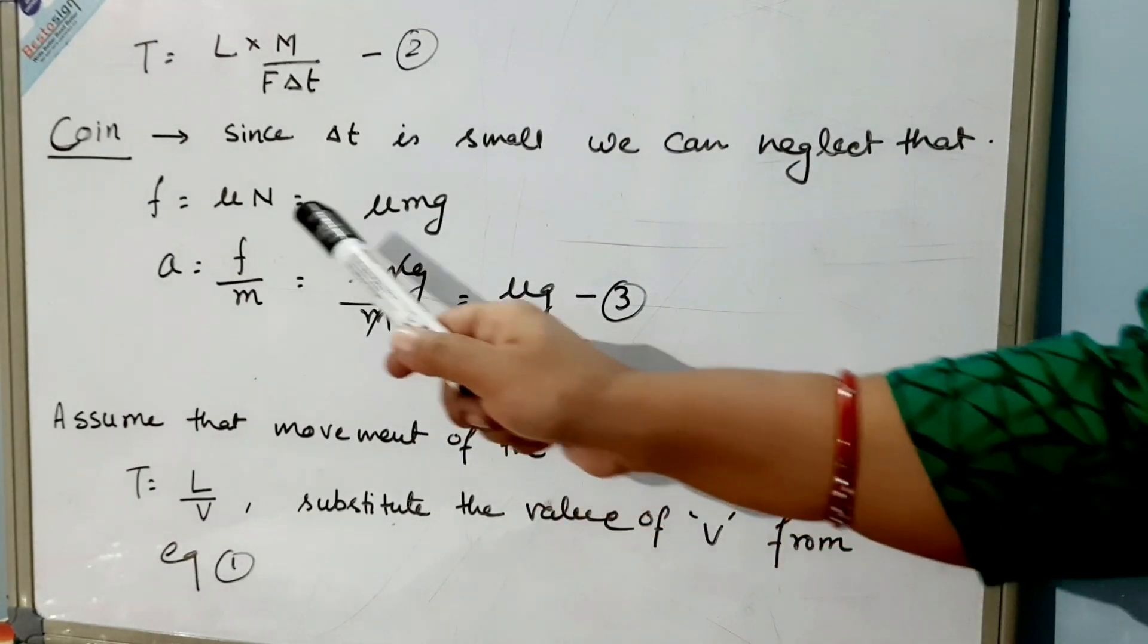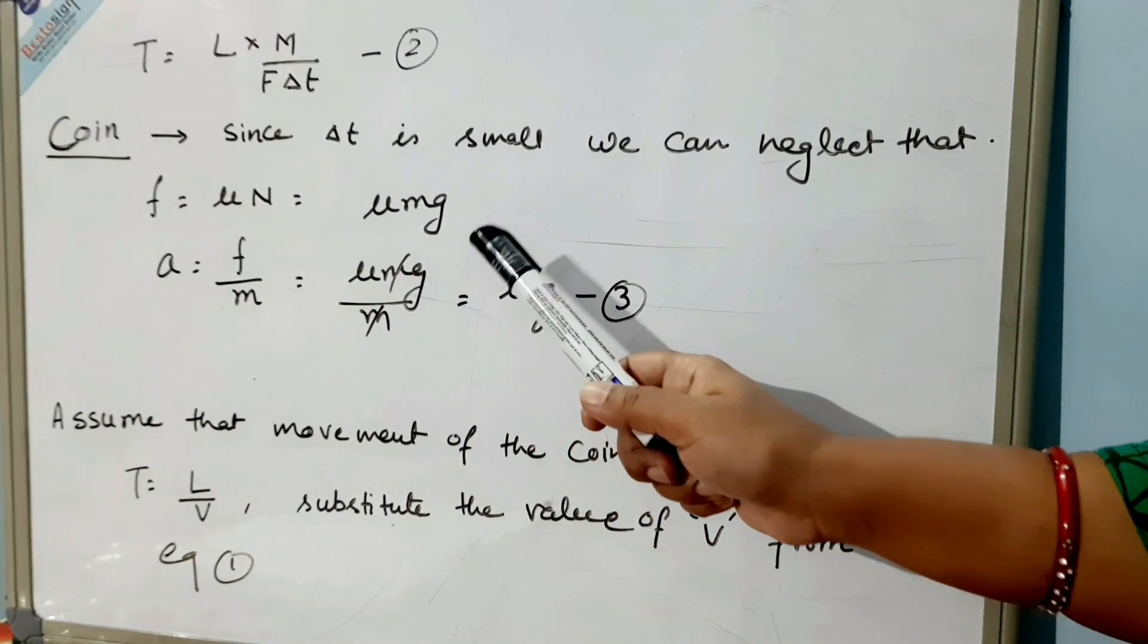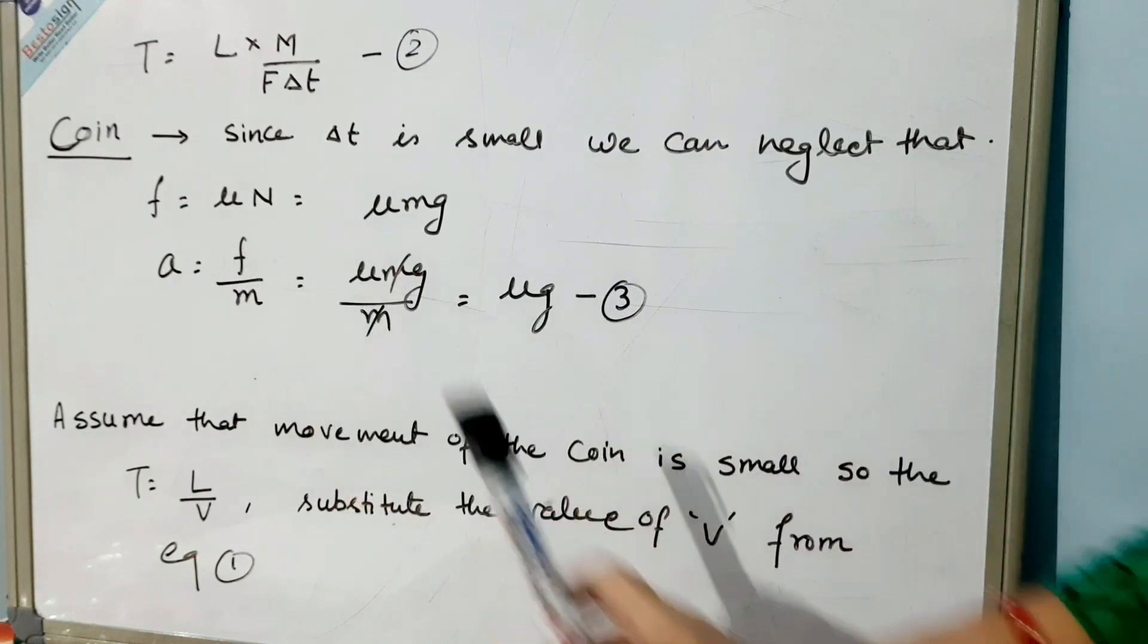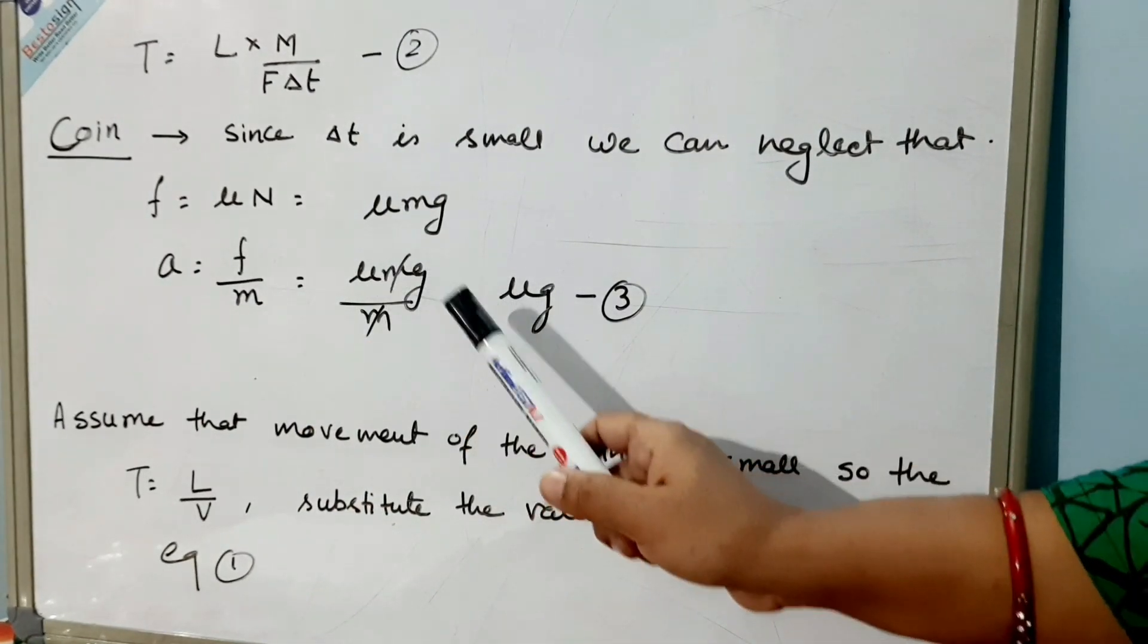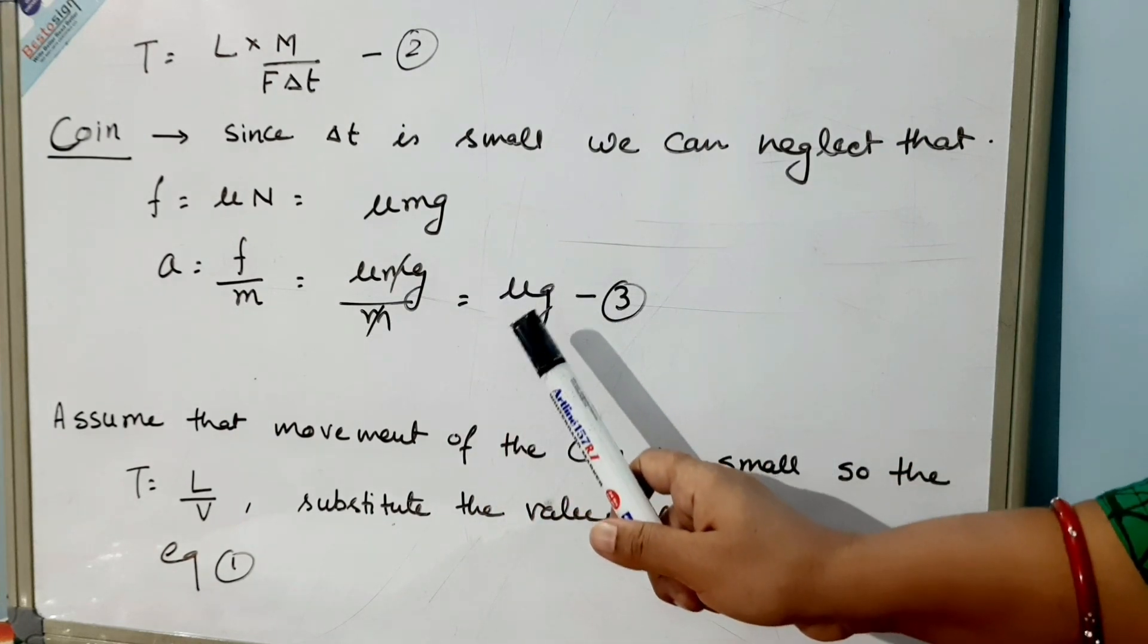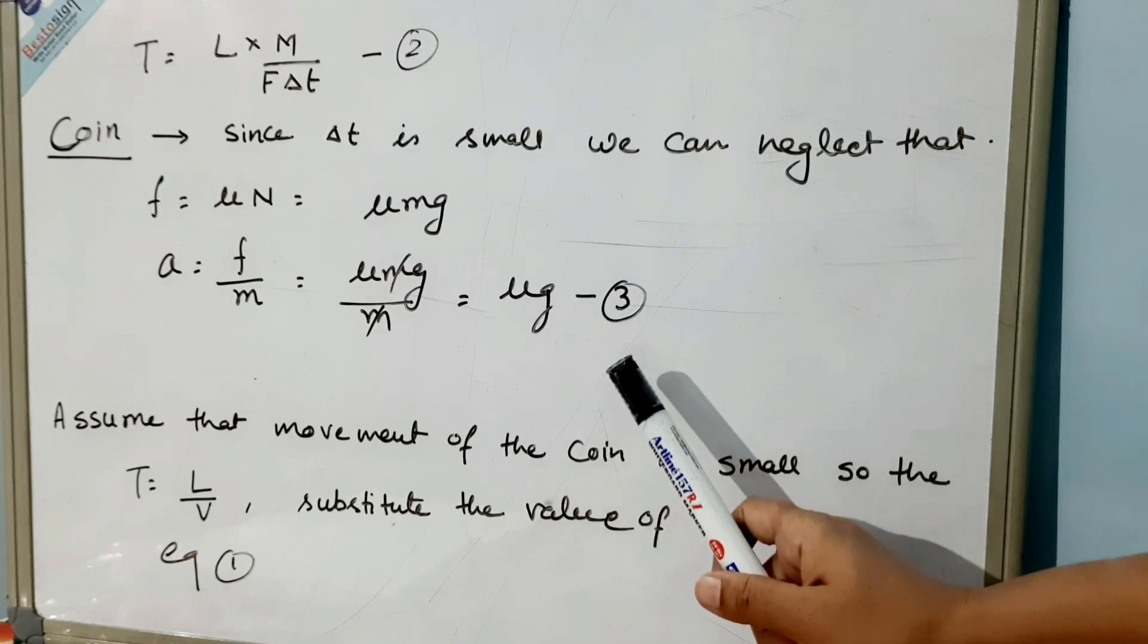The acceleration of the coin will be equal to f/m, so that will be μmg/m. The m's will get cancelled and we'll get the equation a = μg.